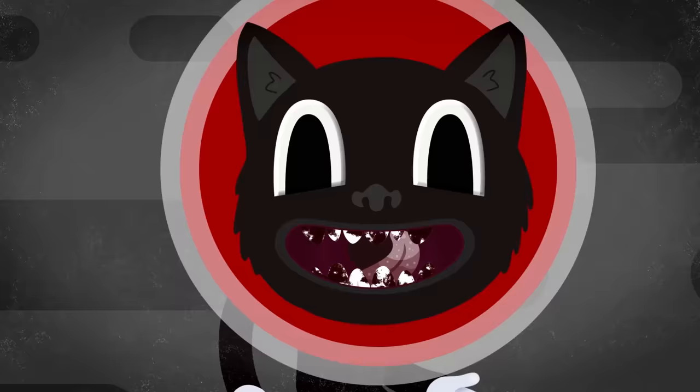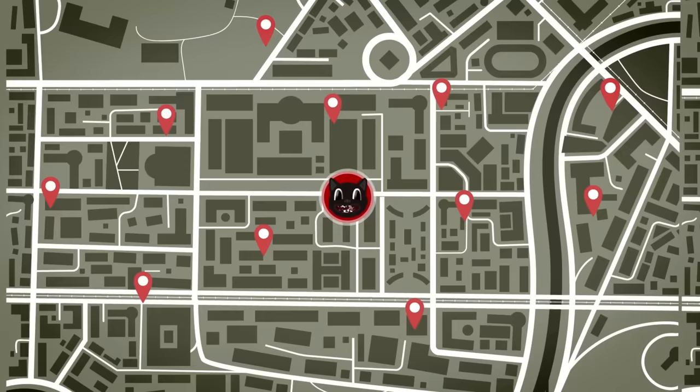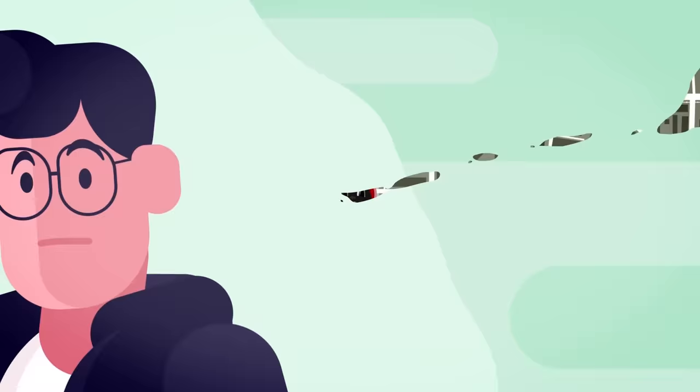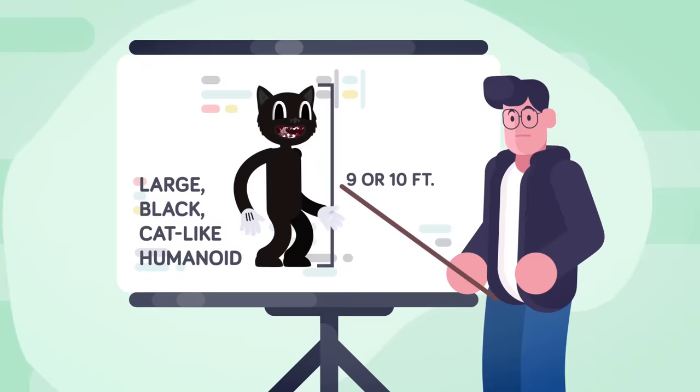Despite its whimsical name, Cartoon Cat is the furthest thing from child-friendly, seeing as it's responsible for a huge number of unexplained disappearances. While Henderson himself has described the being's form as malleable, it's most commonly seen as a large, black, cat-like humanoid around nine or ten feet in height, but it doesn't bear any resemblance to an actual cat.